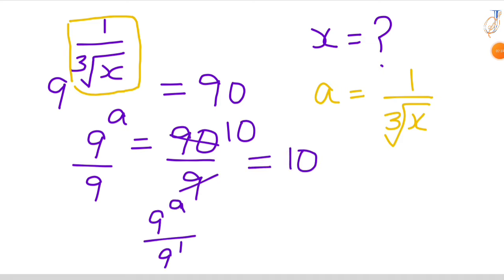In the left hand side we have 9 power a by 9 power 1. It is in the form of a power m by a power n. That is equal to a power m minus n. Same like that, you can write 9 power a minus 1 that is equal to 10.